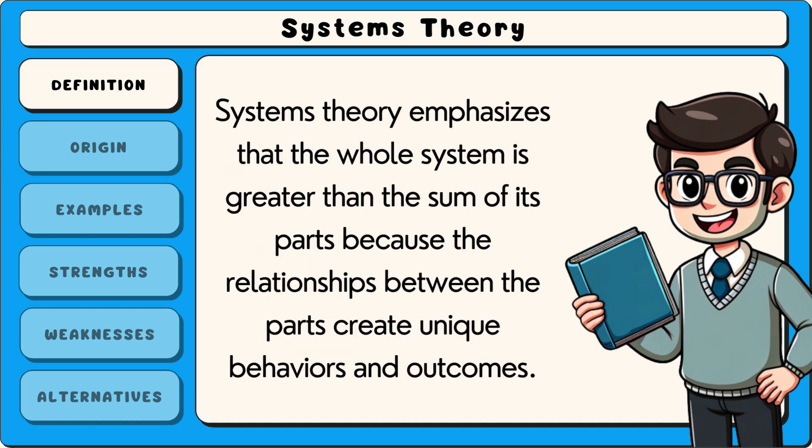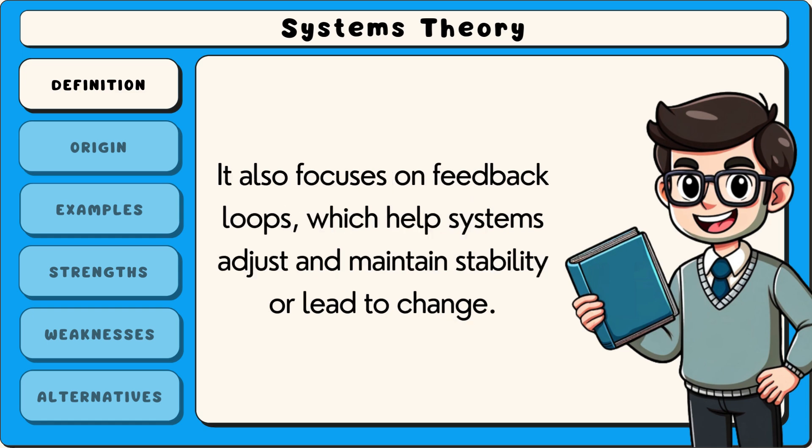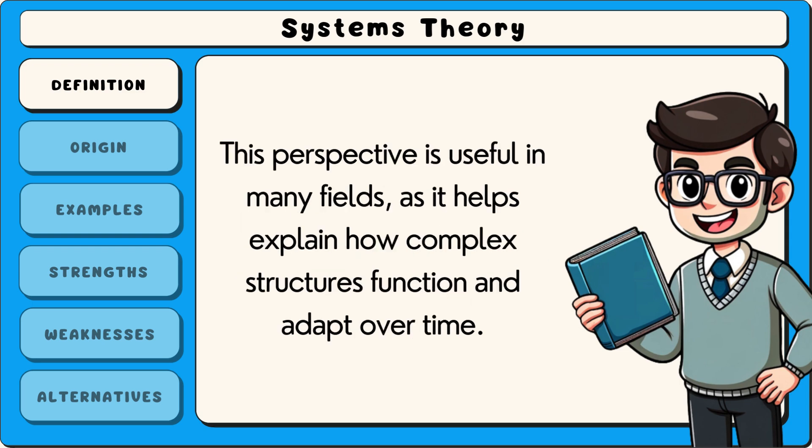Systems theory emphasises that the whole system is greater than the sum of its parts, because the relationships between the parts create unique behaviours and outcomes. It also focuses on feedback loops, which help systems adjust and maintain stability or lead to change. This perspective is useful in many fields as it helps explain how complex structures function and adapt over time.